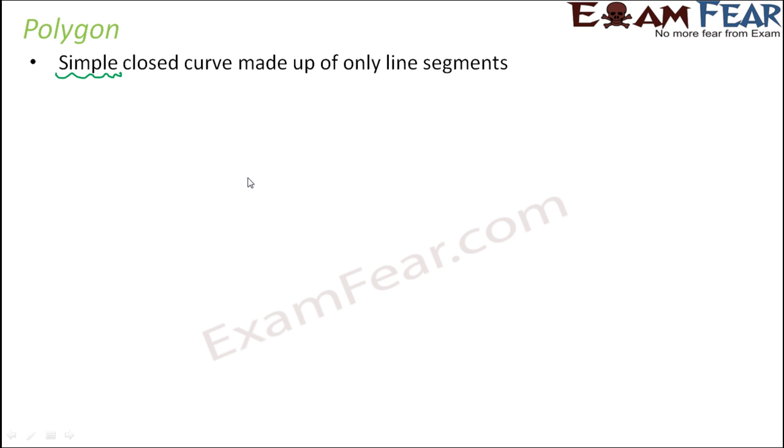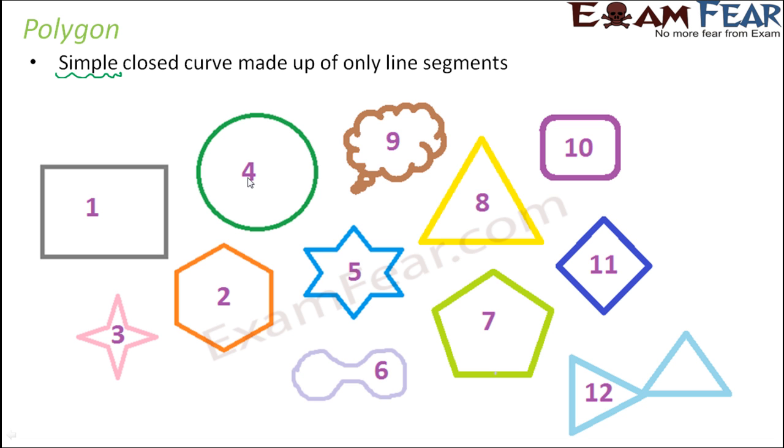So here on the screen, we have almost 12 geometrical figures of which we have to identify which one is polygon and which one is not. Now what do we mean by simple curve? Those curves which do not intersect itself. For example, if I draw something like this, a curve like this, so here this curve never crossed itself. But if I draw a curve like this, this curve is intersecting itself. This is the point of intersection. So this is not a simple curve. A simple curve is one which doesn't cross over itself.